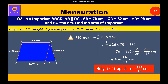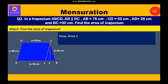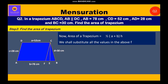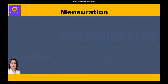Now that we have the height, we can find the area of the trapezium. Area = ½ × (a + b) × h = ½ × (52 + 78) × (336/13) = ½ × 130 × (336/13) = 1680 cm². Therefore the area of the trapezium is 1680 cm². This is how we have solved both cases of the area of a trapezium.